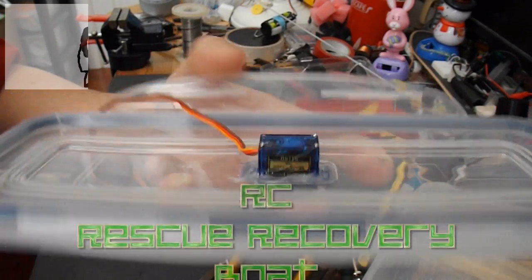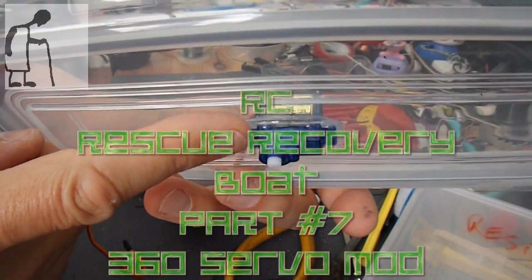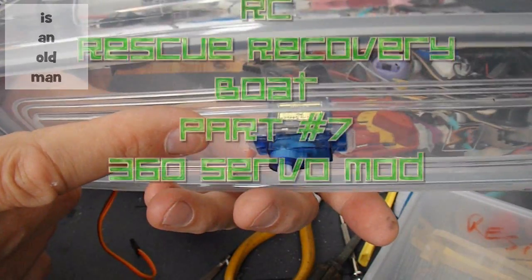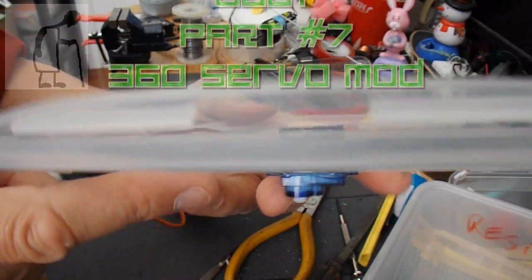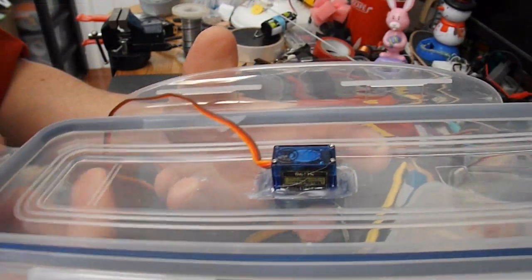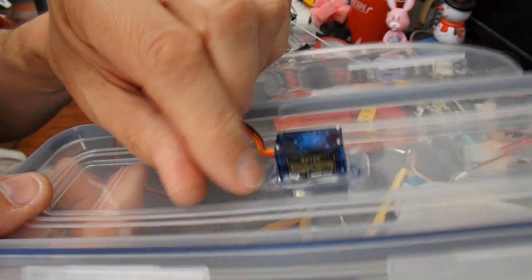Right guys, I've decided to convert this servo to a full 360 degree or continuous rotation. It gives me a little problem because I've already sealed it in place with hot glue.